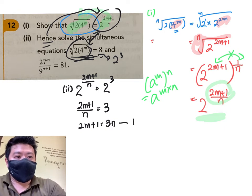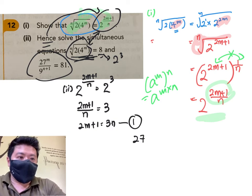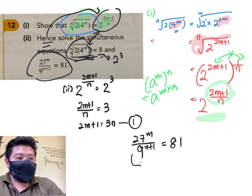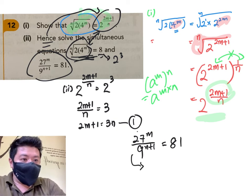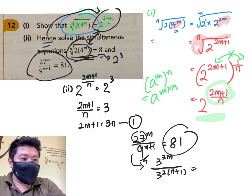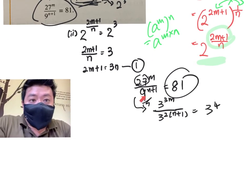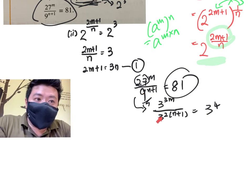And the second equation will come from here. 27 to the power of m over 9 to the power of n plus 1 equals 81. This is the same as 3 power 3m. 9 is the same as 3 power 2 multiplied to n plus 1. 81 is the same as 3 power 4. So I did quite a bit of quick indices. 9 is the same as 3 power 2.